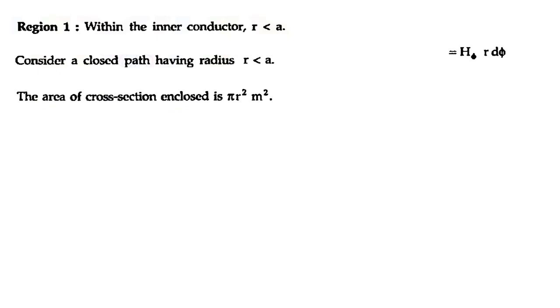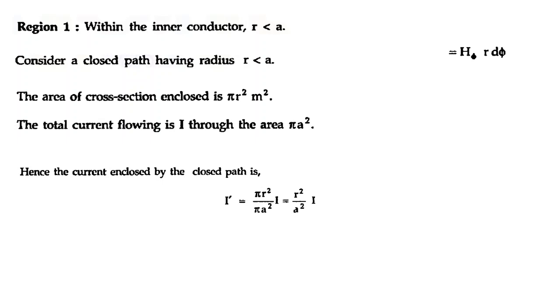Region 1 is the inner conductor, R less than A. We take a closed path having radius R — that is the Ampere path — and the cross-sectional area of the Ampere path is πR². The total current is I and the area of the total inner conductor is πA². So the current enclosed by the closed path, I', equals πR² divided by πA² times I, which simplifies to R²/A² times I.